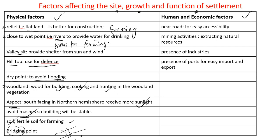Human and economic factors include whether the settlement is near a road, which makes it easily accessible. If mining activity is taking place — extraction of natural resources — people tend to settle there. The presence of industry also attracts people because of employment opportunities. We also have the presence of a port for easy import and export of goods and services.